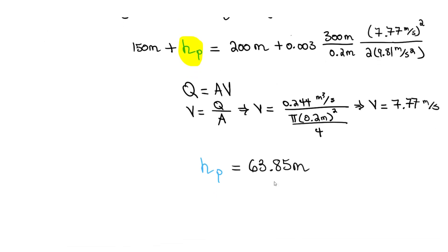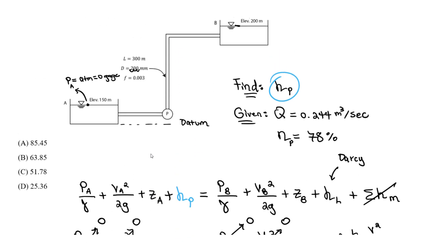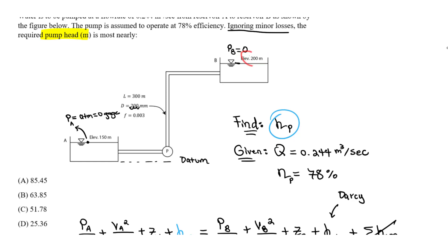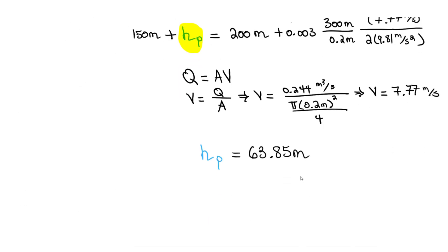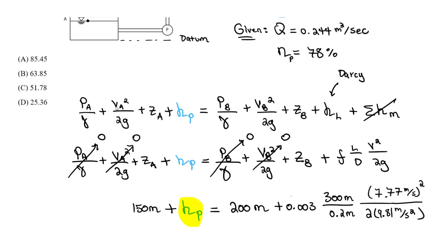The required pump head is 63.85 meters. Note that the elevation difference is only 200 − 150 = 50 m, so why do we need more than 50 m? Because of friction losses due to flow, which depend on the pipe length and diameter. That's why the pump head is greater than 50 m — approximately 63.85 m — and the answer is choice B.